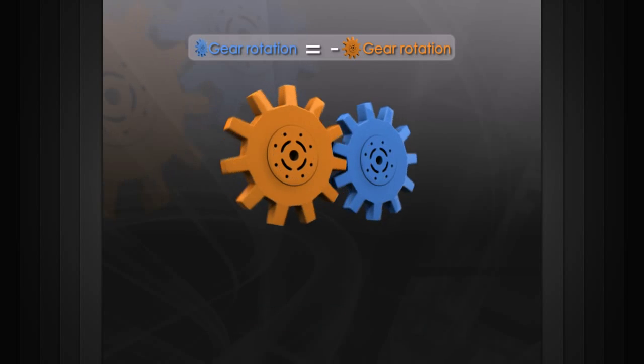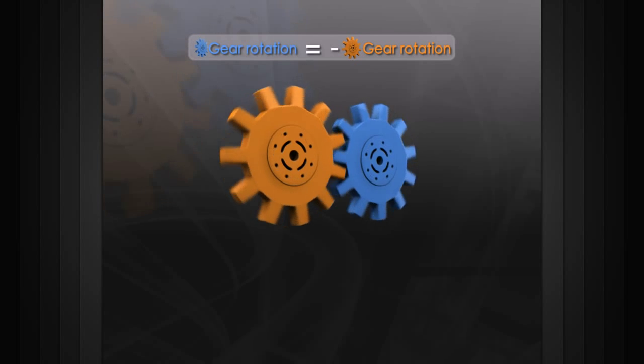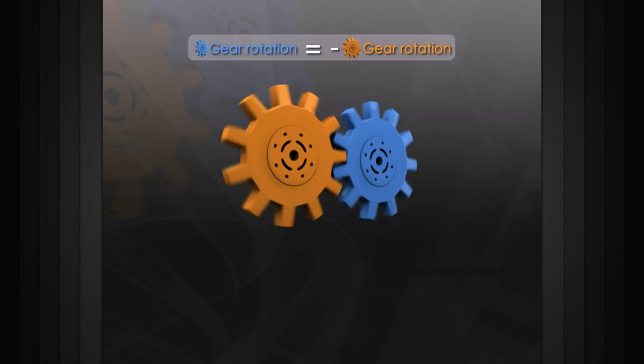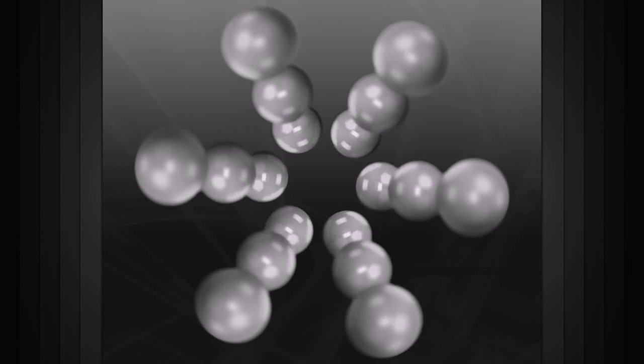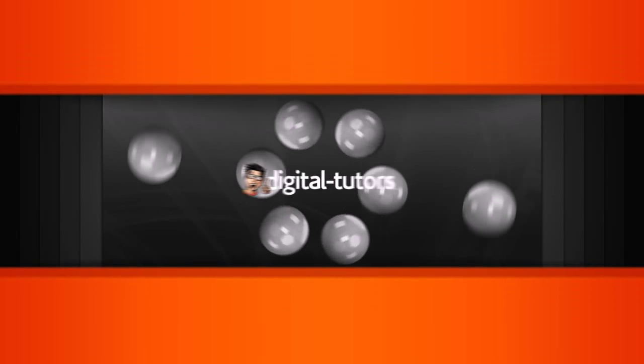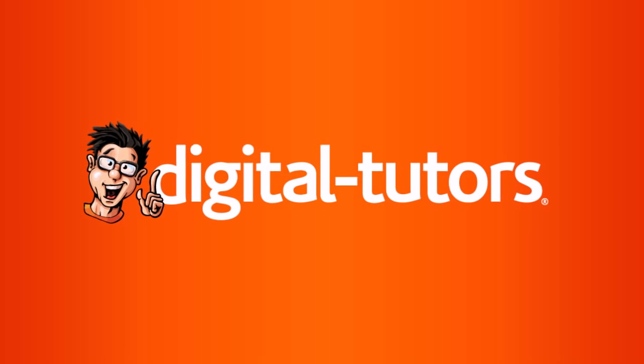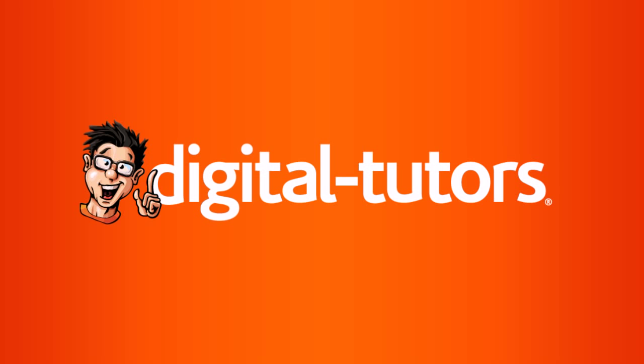But despite these two issues, expressions are still a powerful way to control an object's attributes. They are often used as animating and rigging tools for jobs way too complicated to be done by any other means. For more information, visit the website.